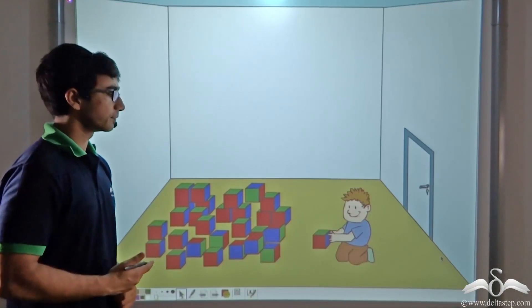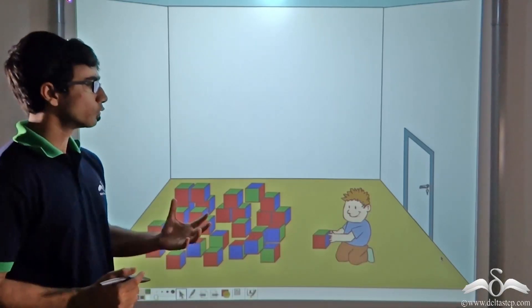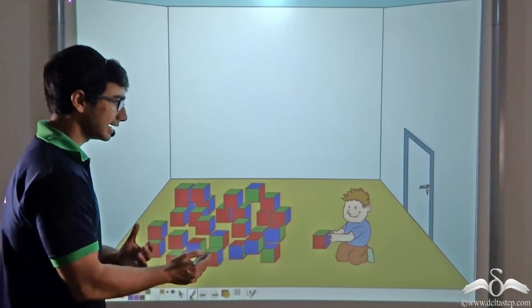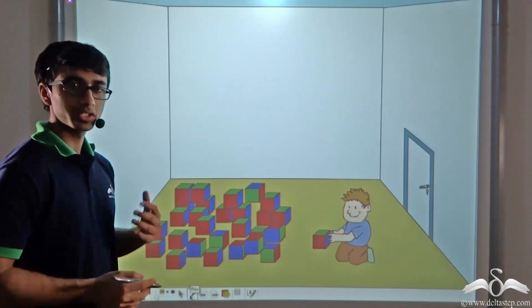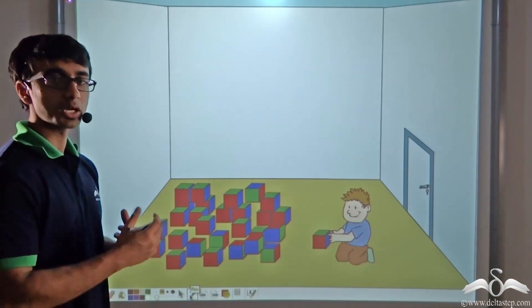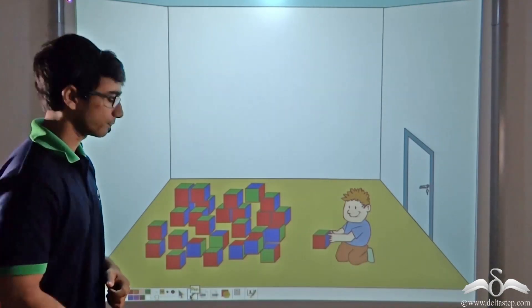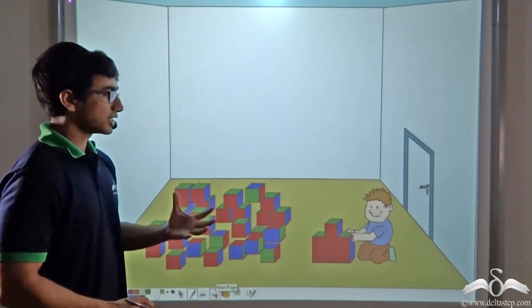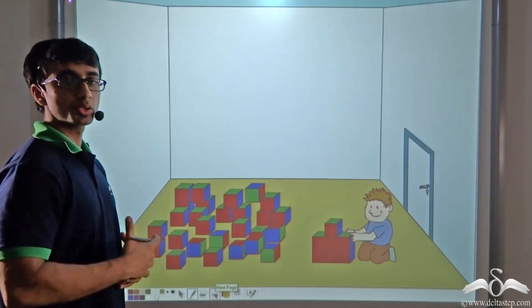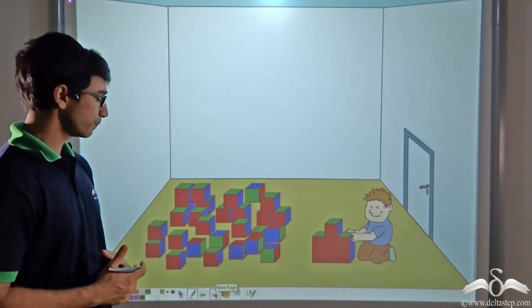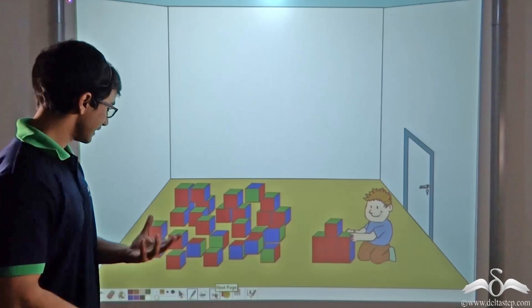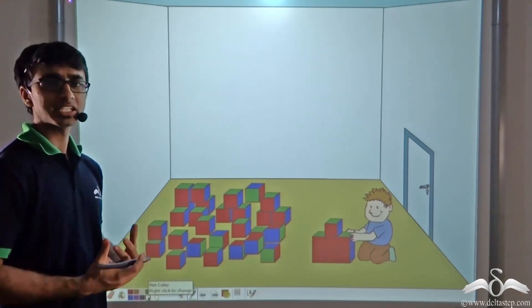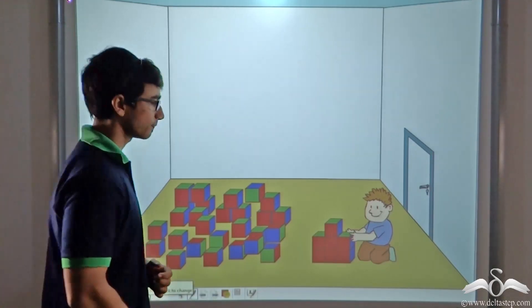Look at the picture on the screen. Over here you will find that a kid is alone in the room and he's playing with a number of blocks. Now as you can see, since the kid is absolutely alone in the room, he's at liberty to form whatever shapes he wants with these blocks.